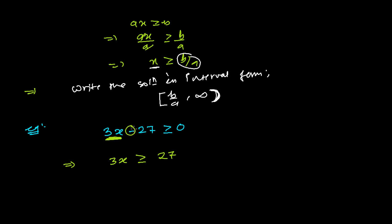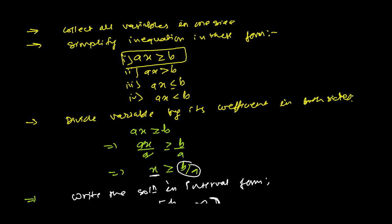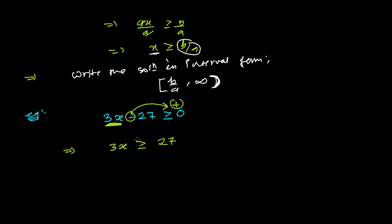So we write 3X on one side and 27 on the other. Since it was minus 27 on the left, moving it to the right makes it plus 27, so 3X ≥ 27. The second rule is to simplify and convert to standard form — and here it already matches AX ≥ B with A = 3 and B = 27.